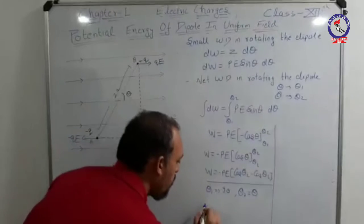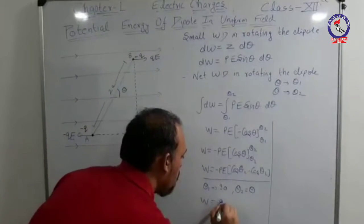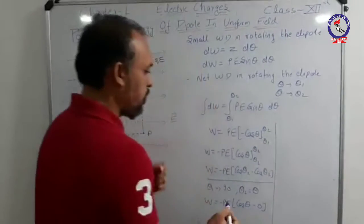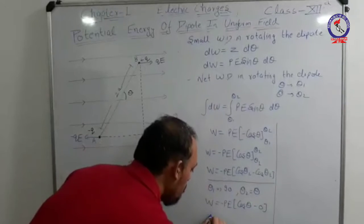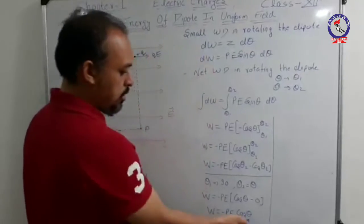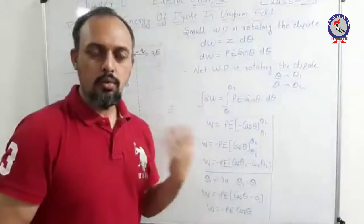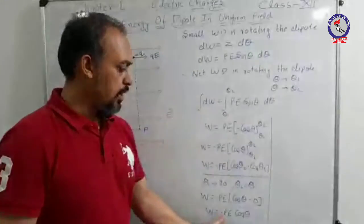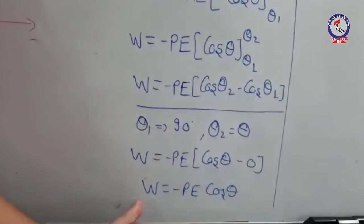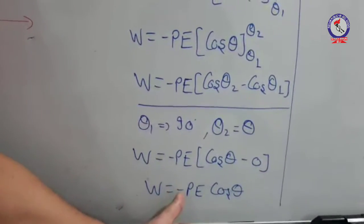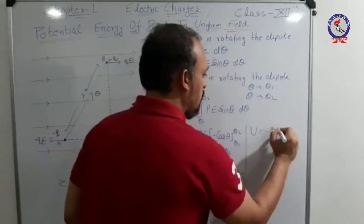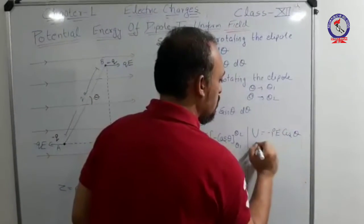Substituting these values, we have minus Pe (cosθ minus 0), as the value of cos 90° is 0. Hence the expression for the net work done in rotating the dipole to a certain angle θ is minus Pe cosθ. This work done corresponds to the potential energy stored in the dipole, given by the expression U equals minus Pe cosθ.